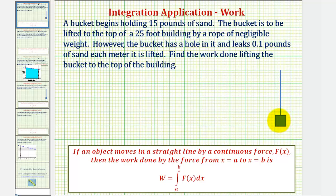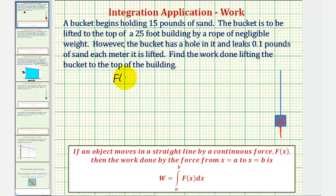So this is our bucket here. It starts weighing 15 pounds, but it's leaking sand out the bottom as it's lifted, so the weight — or the force required to lift the bucket — will change. We're ignoring the weight of the rope because we're told it has negligible weight. The force, f of x, will equal the initial weight of 15 pounds minus the loss of 0.1 pounds per meter, which is 0.1 times x, where x is the distance in meters.